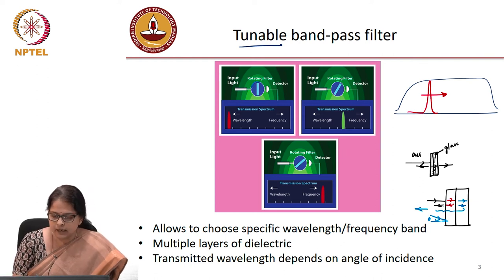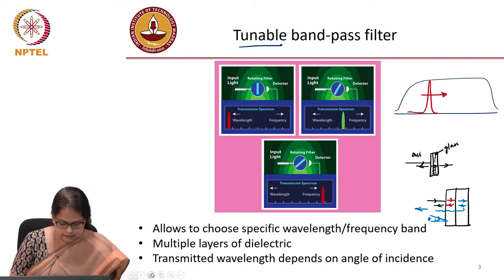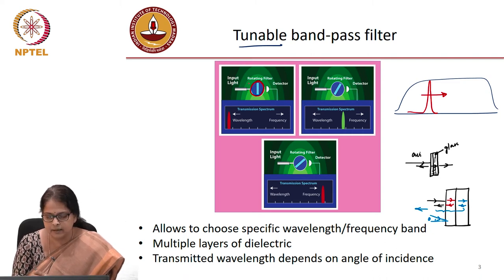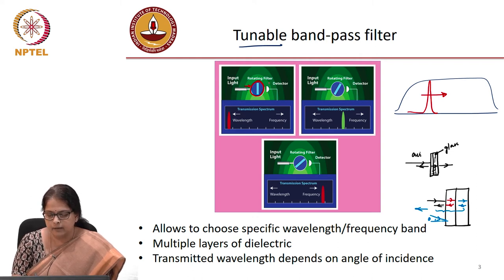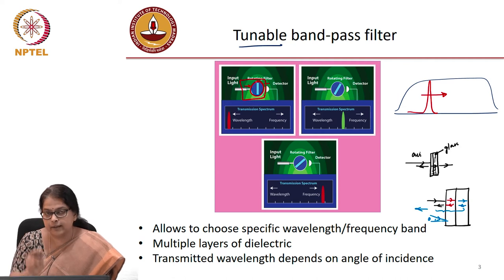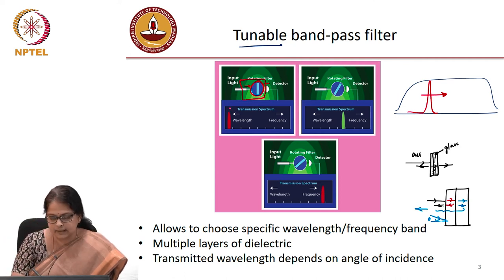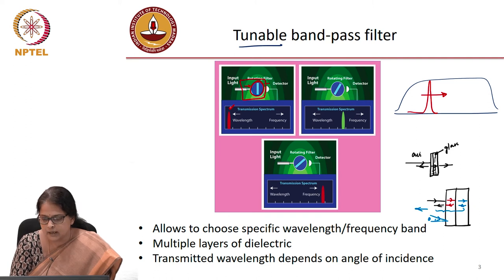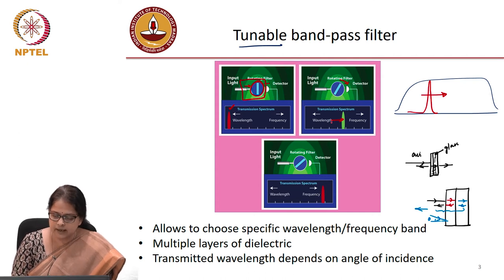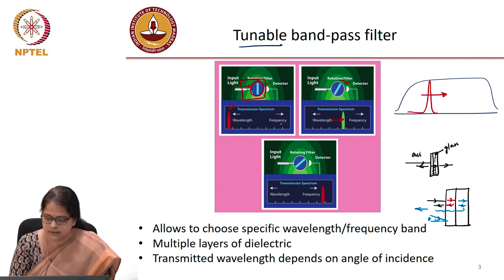Looking at the design, there is a rotating filter in the middle, which is the key functional dielectric element. Input light falls on this rotating filter. At normal incidence, a specific wavelength gets transmitted. As you rotate the filter, the wavelength that gets transmitted actually shifts — this can be read off a scale showing frequency on one side and wavelength on the other.